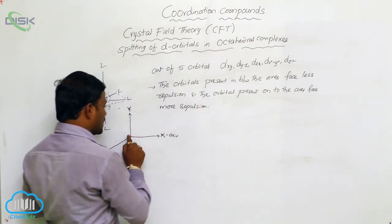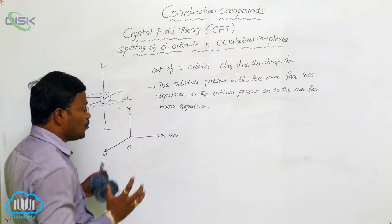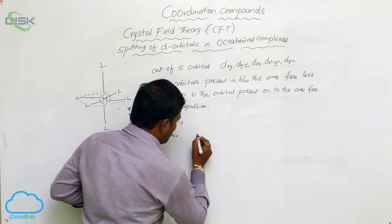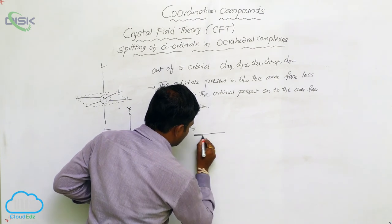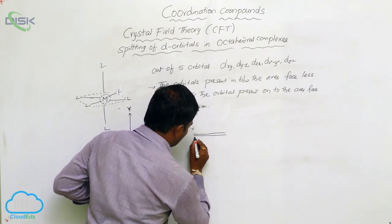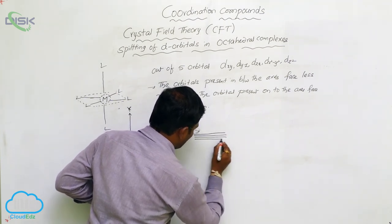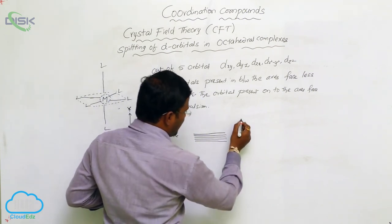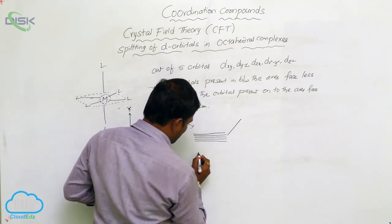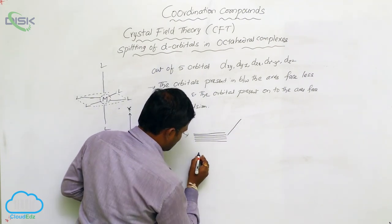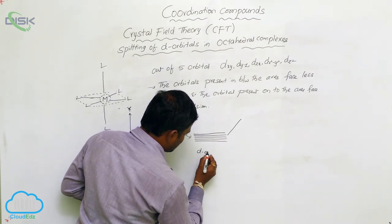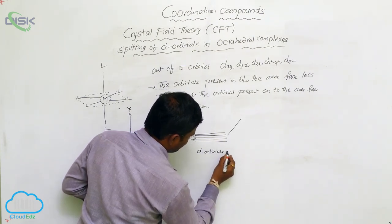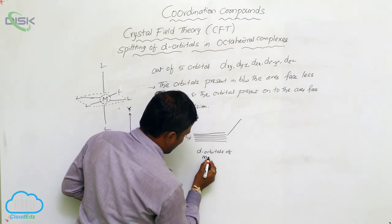The orbitals present onto the axis face more repulsions with ligands, while those in between the axes face less repulsion. As a result, the five d orbitals present in the metal atom are split into two different energy levels in the presence of ligands in an octahedral field.